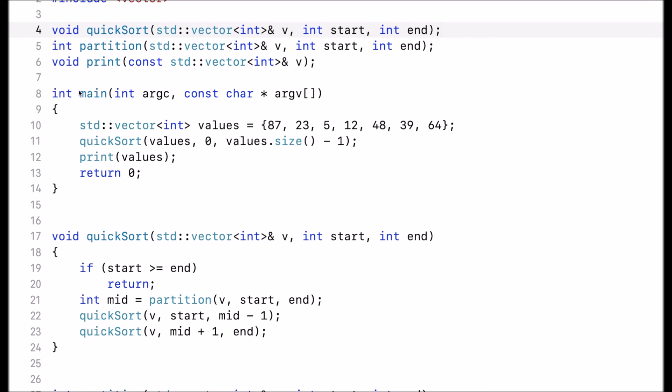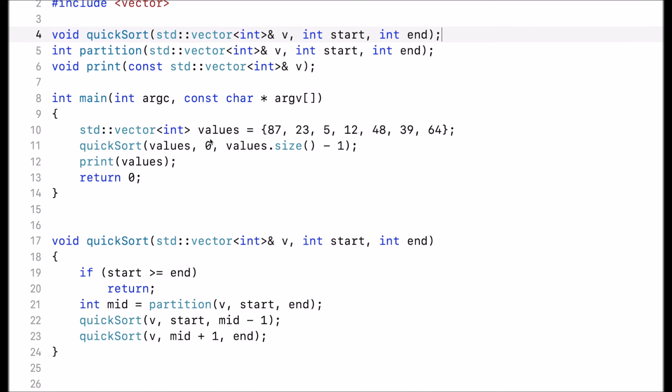Now, to test this, I have a main function. This creates a vector of several integer elements. I call the quicksort function with the vector and the starting index of 0 and the end index of size minus 1. Again, end is the index of the last element. It doesn't represent the size.